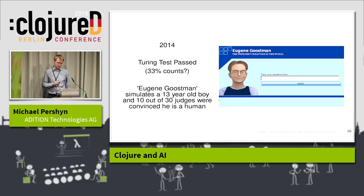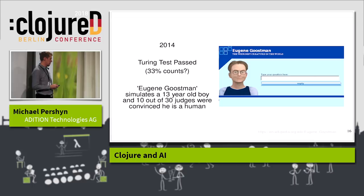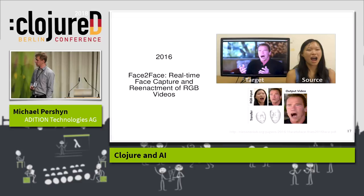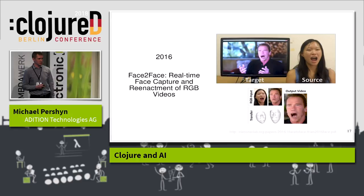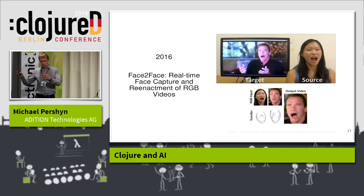In 2014, the Turing test was passed by a machine called Eugene Goostman — a simulated 13-year-old boy from Odessa — who managed to convince 10 of 30 judges that he was human. In 2016, there was amazing research published: real-time face capture and reenactment of RGB videos. They take the facial expression of a source actor and put it onto a real-time video, so you can actually control a politician's face on video. Really impressive.